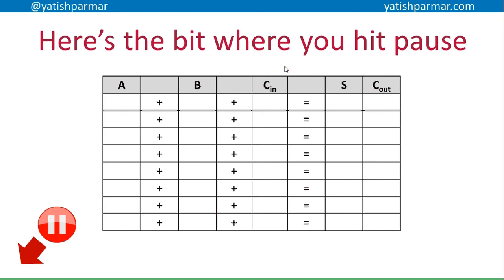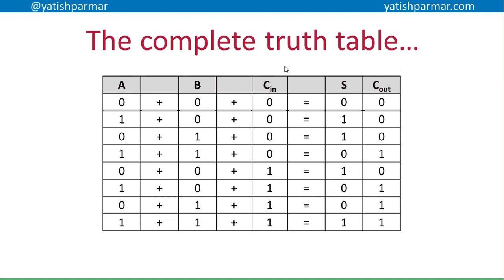Now - this is the bit where you hit pause and work out the truth table for a full adder. We have three inputs, therefore eight permutations. Based on those eight permutations, what is S - the sum - going to be, and what is the carry-out being propagated forward? Pause now. Assuming you've just hit play again - here's my completed table. Check your rows carefully against mine to verify you have the correct inputs and outputs.